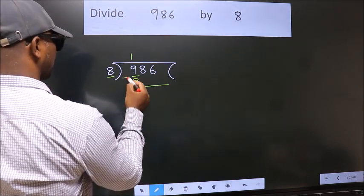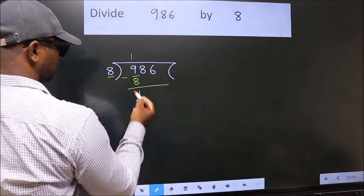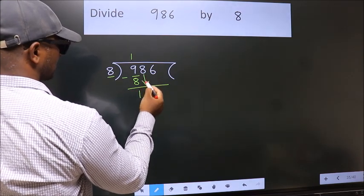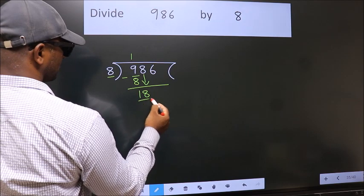Now we should subtract. We get 1. After this, bring down the beside number, so 8 down, so 18.